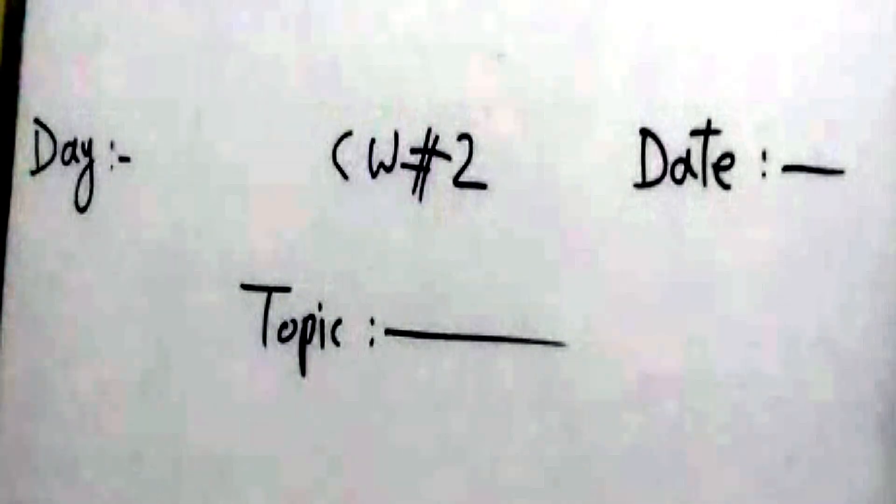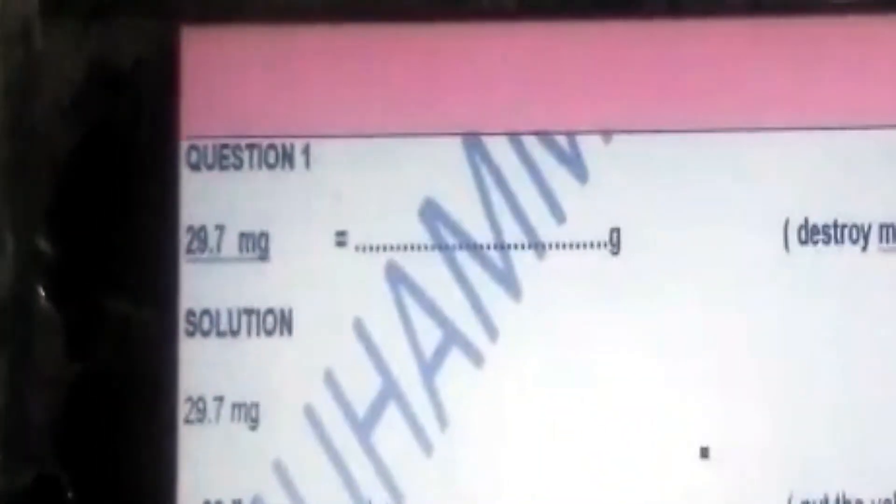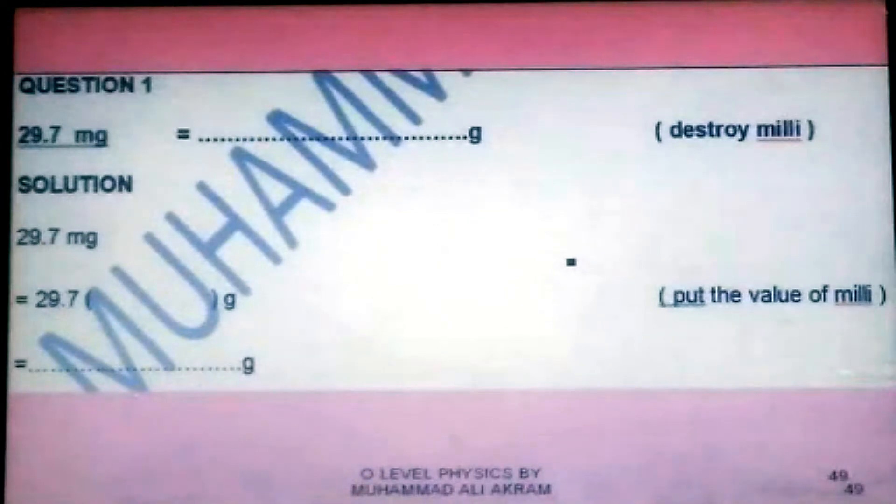Please look at the white board. You can see classwork number 2 should be written in the middle. Day, top left corner. Date, top right corner. Then topic. This is how you have to start classwork number 2. Coming back to the laptop screen, classwork number 2 starts with this question. This will be question number 7 for you. You can write question number 7 or question number 1. It's up to you.